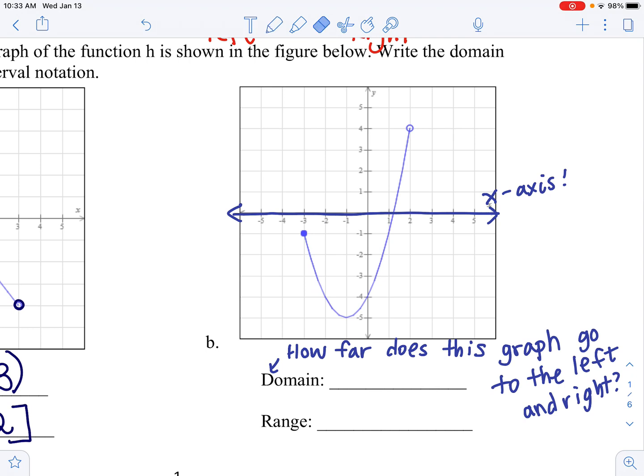This piece of graph, how far does it go to the left? The farthest, the most left. It goes as far as negative 3 to the left, as you can see, right? Negative 3. So I'm going to go ahead and say negative 3 first, comma.